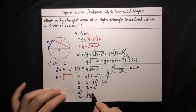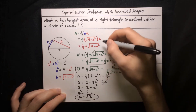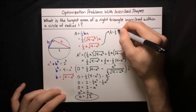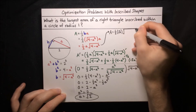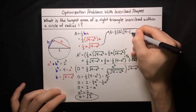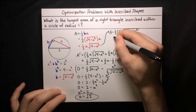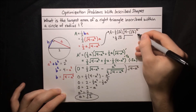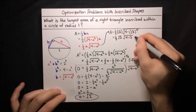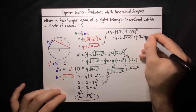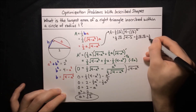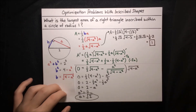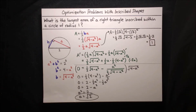Now we just plug this value back into our area function to get the largest area. Area equals one half times a, which is root 2, times the square root of 4 minus a squared. Substituting a equals root 2: this becomes one half times root 2 times the square root of 4 minus 2, which equals one half times root 2 times root 2, which equals one half times 2, which equals 1. That is the largest area of a right triangle inscribed within a circle of radius 1.